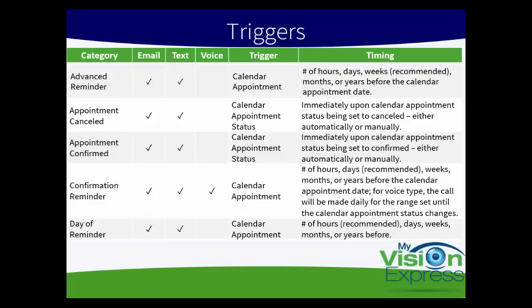The confirmation reminder can be sent via email, text, or voice. It is based on a calendar appointment and can be sent hours, days, weeks, months, or years before the appointment date. For voice types, the call will be made daily for the range set until the calendar appointment status changes — so if you want your patients called every day until they confirm or cancel, you can set that up. The day of reminder is sent via email or text, triggered by a calendar appointment — we recommend setting it for a few hours before the appointment.